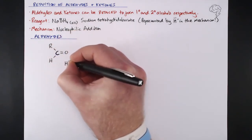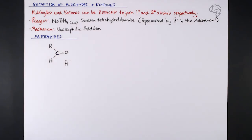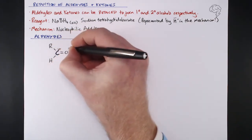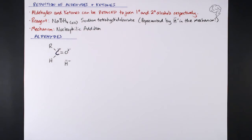Our H minus is going to attack, so we need to make sure we put the dipole on our carbonyl group, otherwise it's got nothing to attack. We need something positive for that nucleophile to attack.